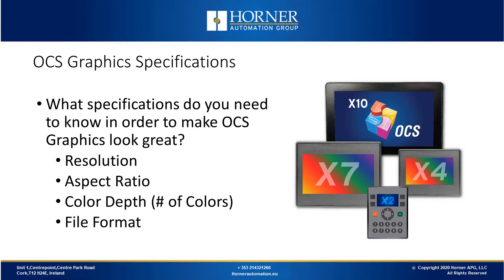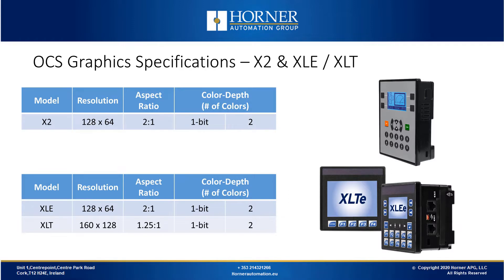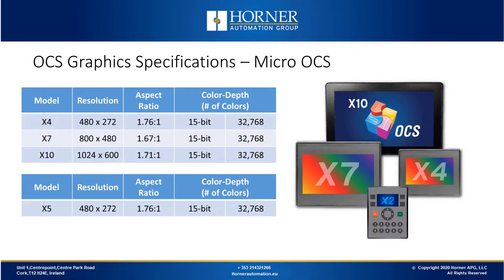Now we'll go through some of our product specifications. We'll start with our entry-level products that have monochrome screens. The X2 and the XLE can display monochrome graphics on their 2-inch displays with 128x64 pixel resolution. The XLT can also display monochrome graphics on its slightly bigger display with 160x128 pixel resolution. Our other products in the Micro OCS series have full color screens with more resolution, supporting 15-bit color, which gives you vivid and detailed graphics.